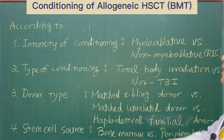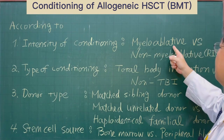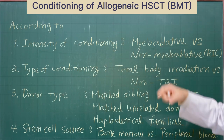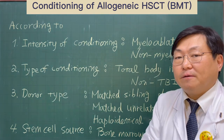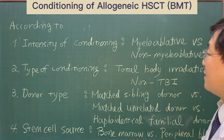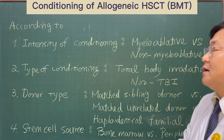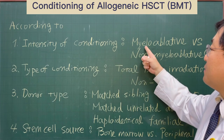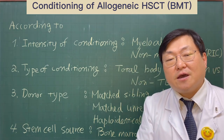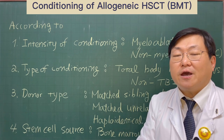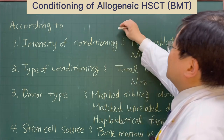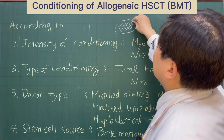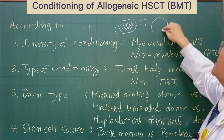Previously, we used myeloablative conditioning. Myeloablative conditioning means that it can ablate all the functions of myeloid stem cells. In myeloid stem cells, we have various kinds of immunological cells, including myeloblasts and lymphoblasts. So after receiving this kind of myeloablative chemotherapy or radiation therapy, the stem cells and immune cells of the patient will be ablated totally. The stem cells are all removed from the bone marrow, making the bone marrow into a hollow, empty space.